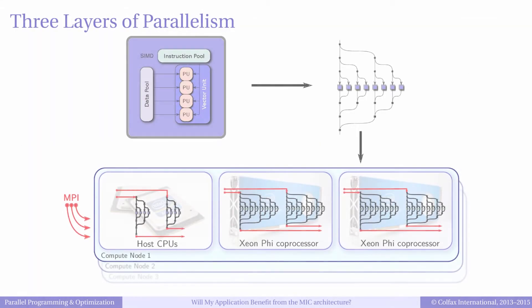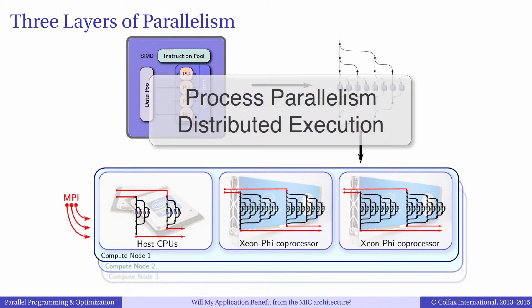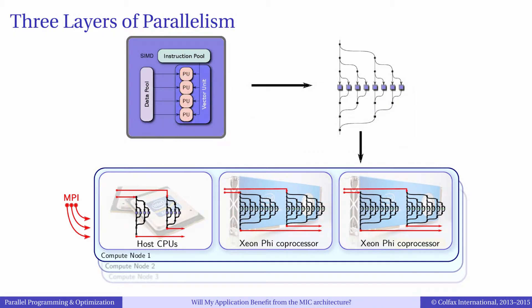Finally, let's consider process parallelism. Naturally, process parallelism is a concern for cluster calculations where just a few compute nodes or up to thousands of compute nodes can process a workload. However, with Intel Xeon Phi coprocessors, process parallelism may also be important with a single compute node or a workstation. At the very least, a system with one Xeon Phi coprocessor has two independent compute devices: the host CPU and the coprocessor.